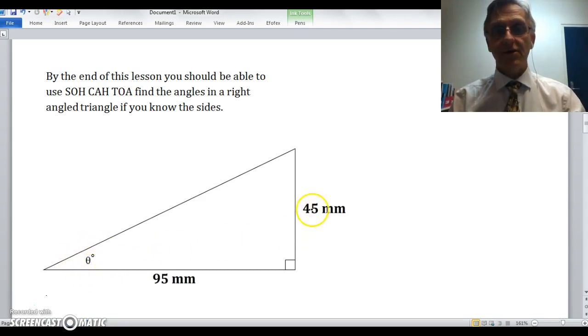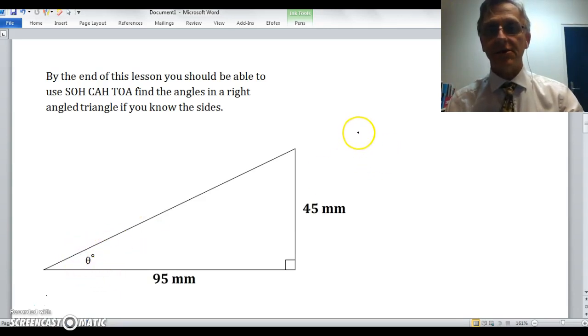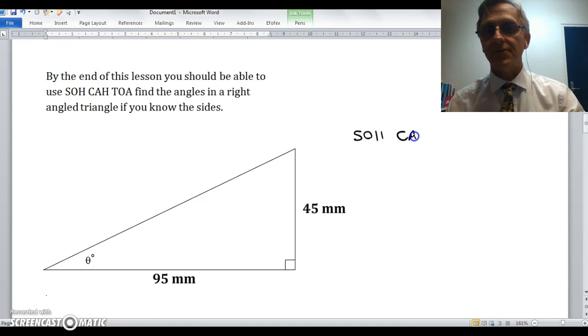In this triangle I know I've got a 45mm side and a 95mm side on the opposite and adjacent sides, but the angle of interest we don't know. So when I write down the SOHCAHTOA or the trigonometric ratio, using SOHCAHTOA to decide what ratio I've got here, this is a tan ratio.